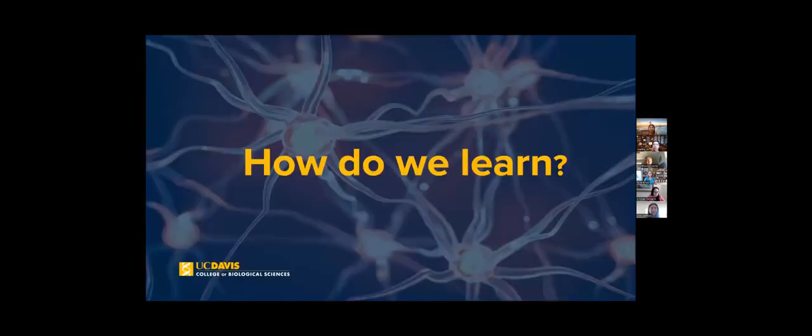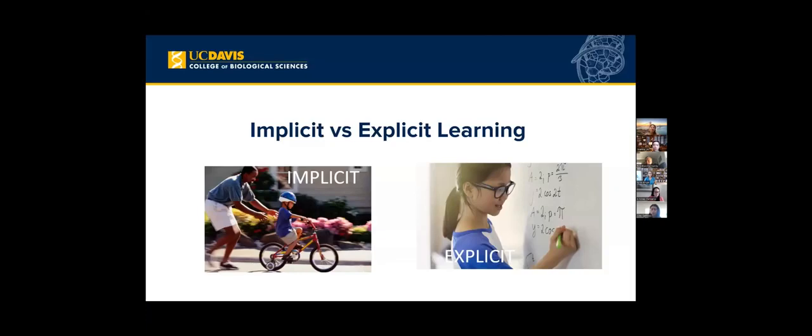One of the first things we are examining in our lab is how do we learn. We're going to go over two types of learning, which is implicit and explicit learning. Implicit learning is more subconscious, like riding a bicycle, whereas explicit learning is more conscious and you're more aware of what you are doing.